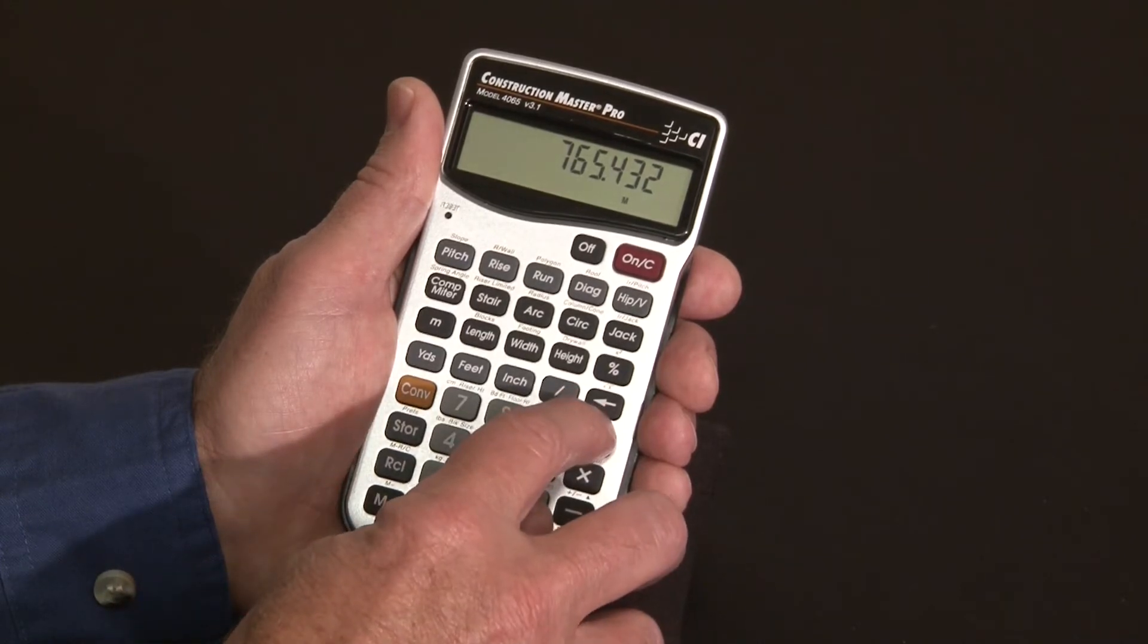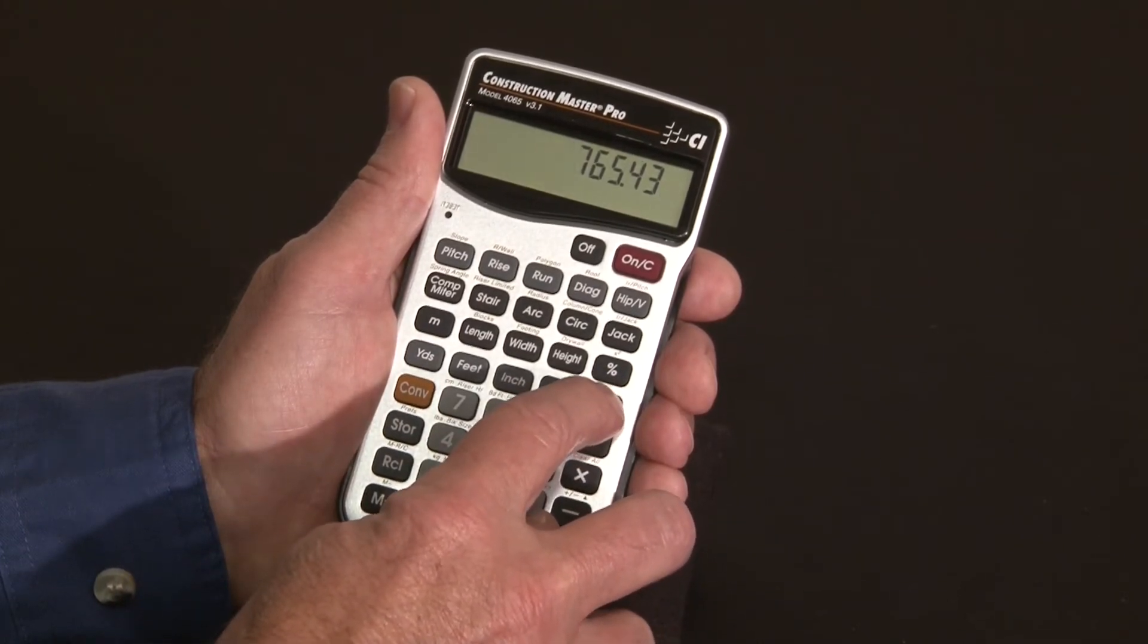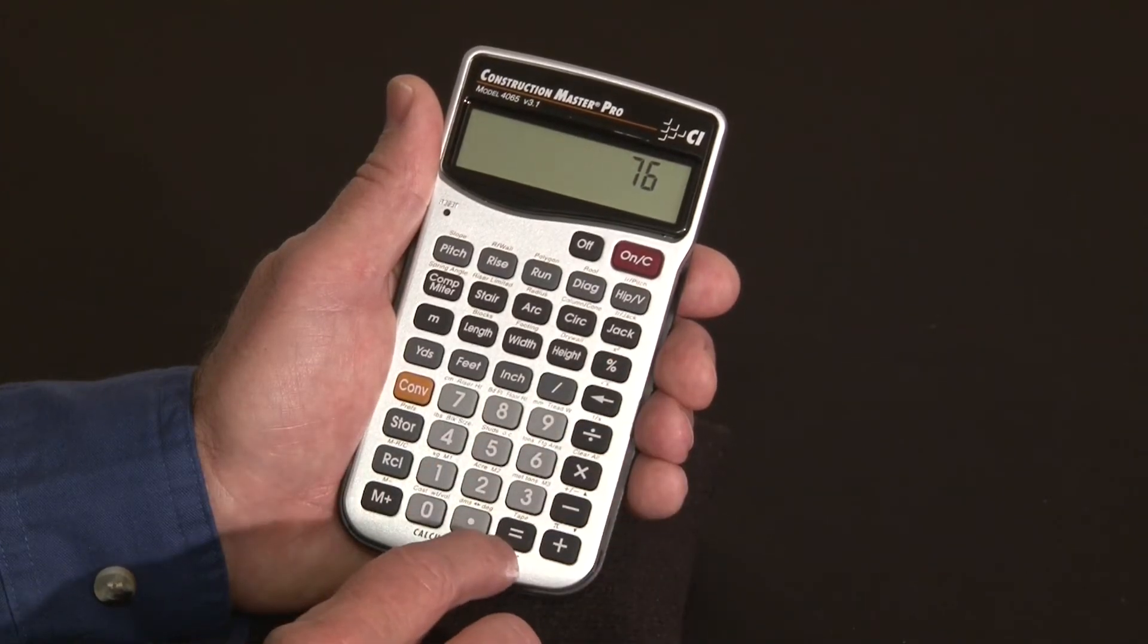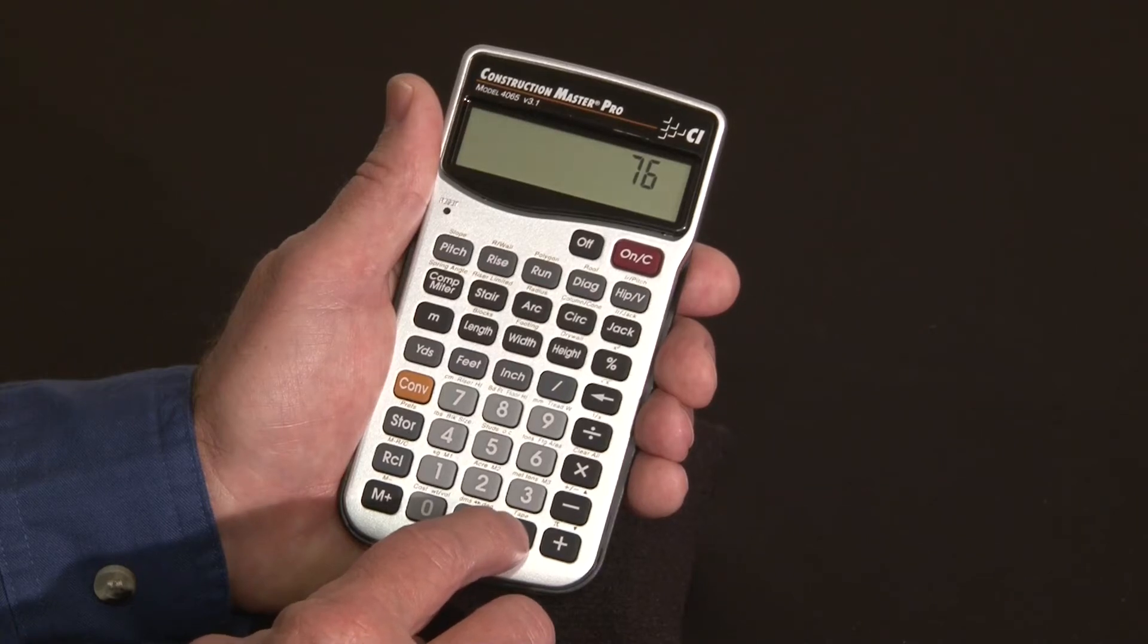There's a backspace key here that lets you back out digits one digit at a time, as well as a paperless tape function here that lets you review your last twenty entries.